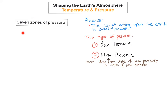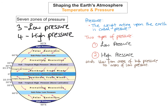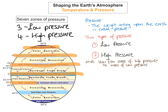Here is a diagram of the Earth showing the seven zones. There are three low pressure zones and four high pressure zones. Looking at the diagram, the seven zones are numbered one through seven.